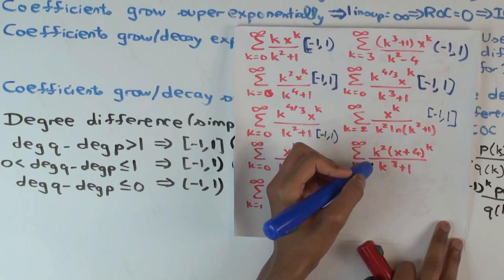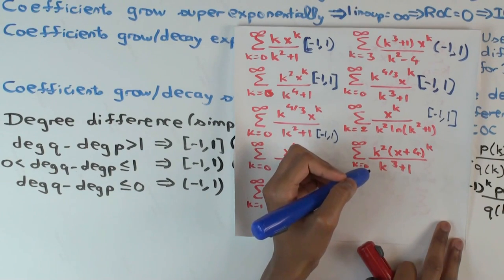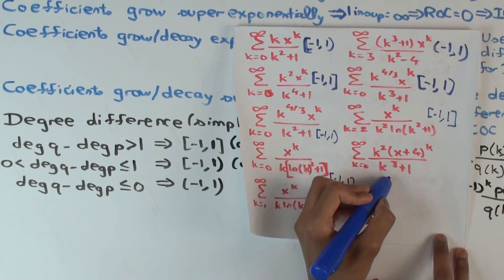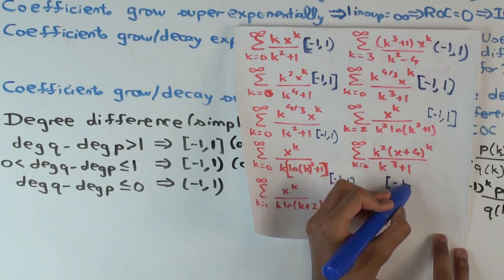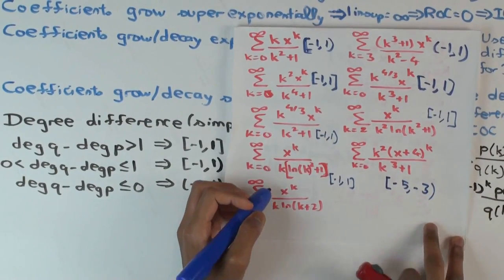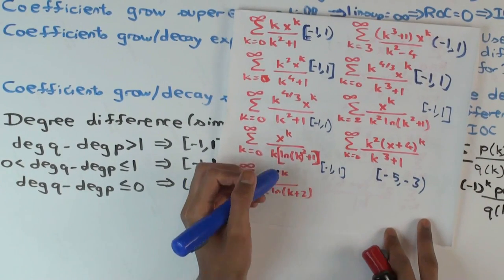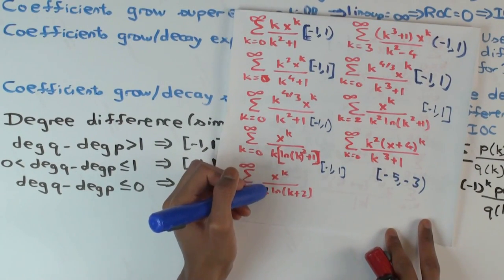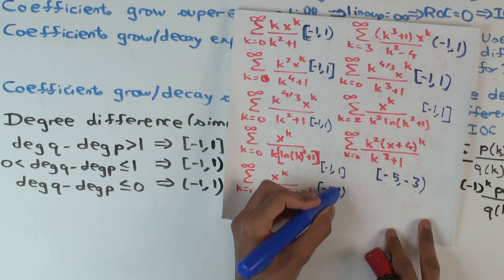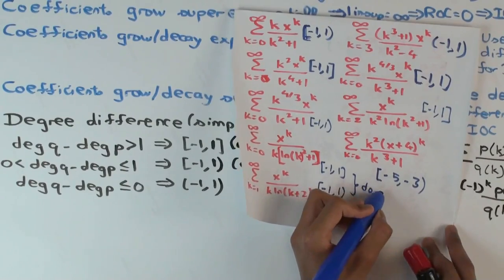The next example: what's the actual interval of convergence? The center here is negative four. So it will be from negative five closed to negative three open. The last one: at minus one it's still closed because the alternating series theorem still applies, but it's open on the right. For these last two you have to actually do the integral test — it's not direct from the degree difference.